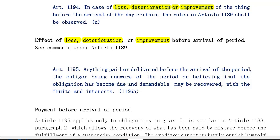Under Article 1195, anything paid or delivered before the arrival of the period — if the obligor or debtor, being unaware of the period and believing that the obligation has become due, has made payment — then what was paid may be recovered, including the fruits and interest.